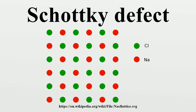A Schottky defect is a type of point defect in a crystal lattice, named after Walter H. Schottky. In non-ionic crystals it means a lattice vacancy defect. In ionic crystals, the defect forms when oppositely charged ions leave their lattice sites, creating vacancies. These vacancies are formed in stoichiometric units to maintain an overall neutral charge in the ionic solid, and are then free to move about as their own entities.